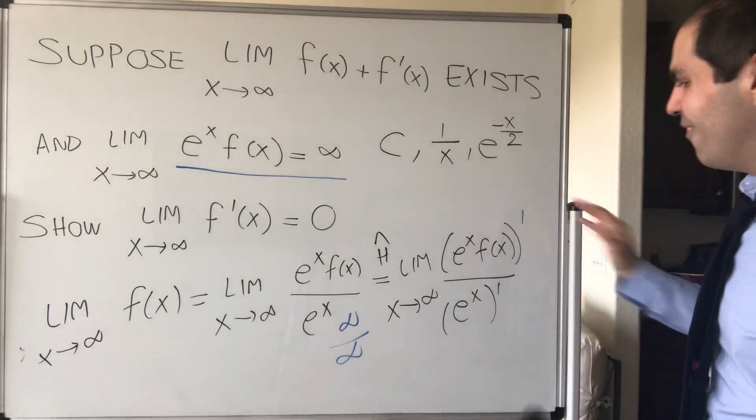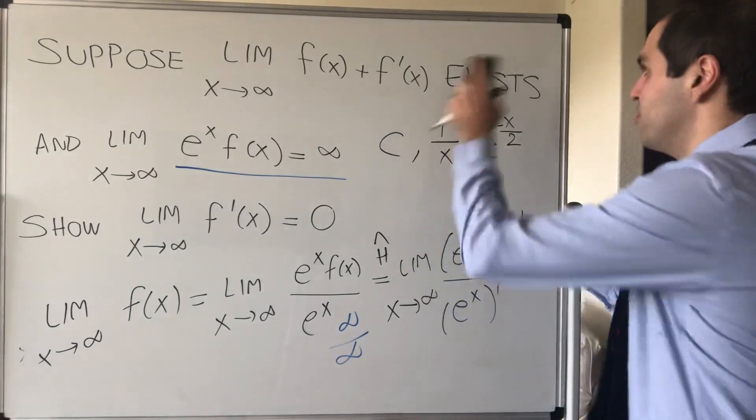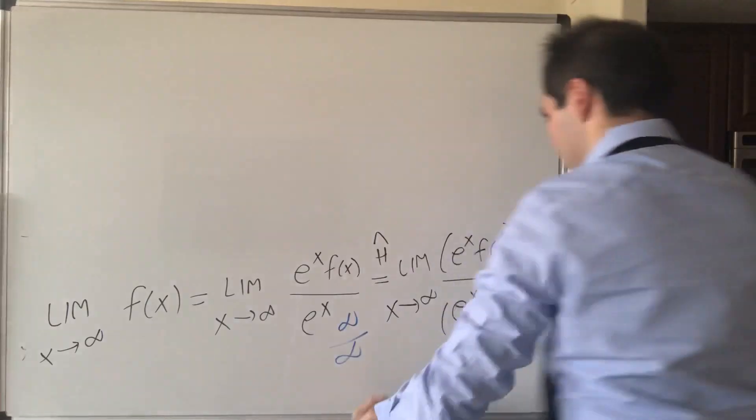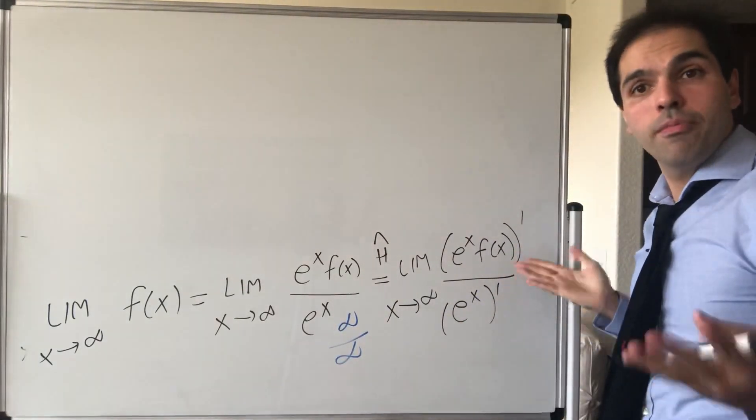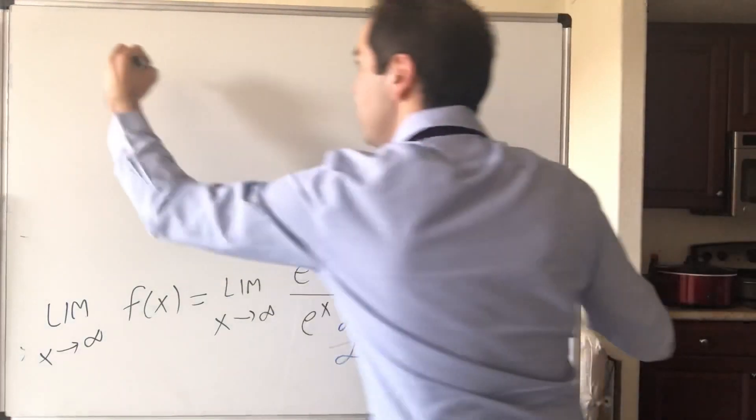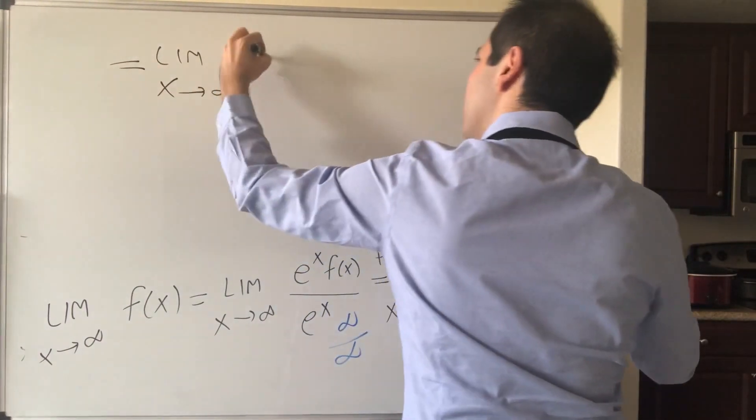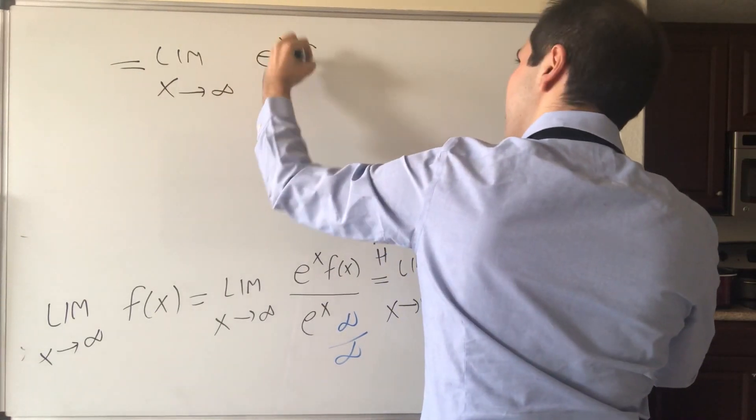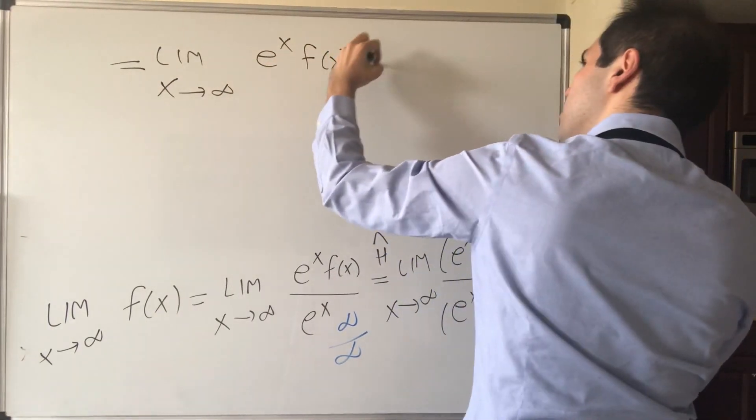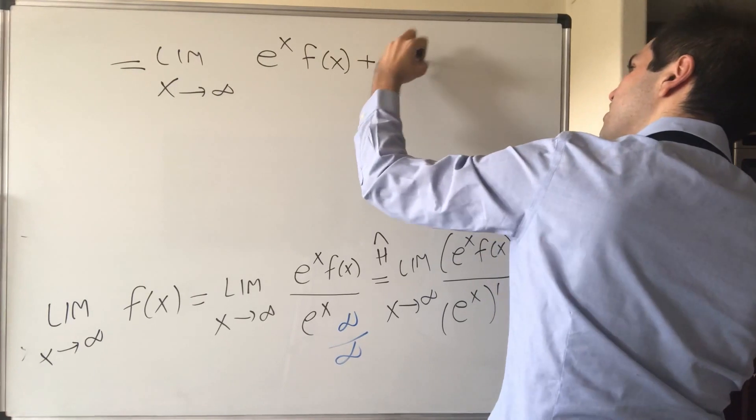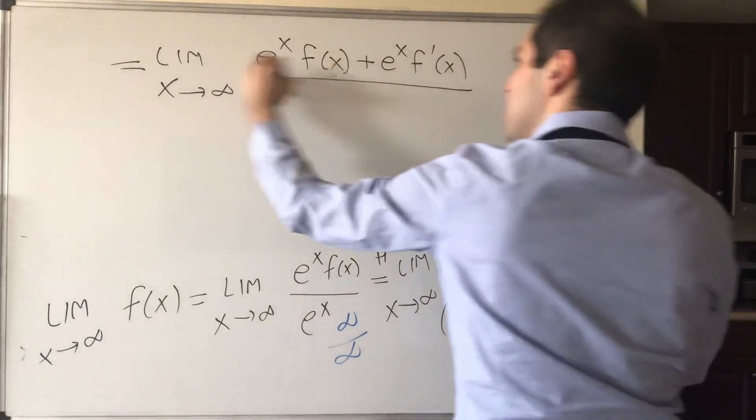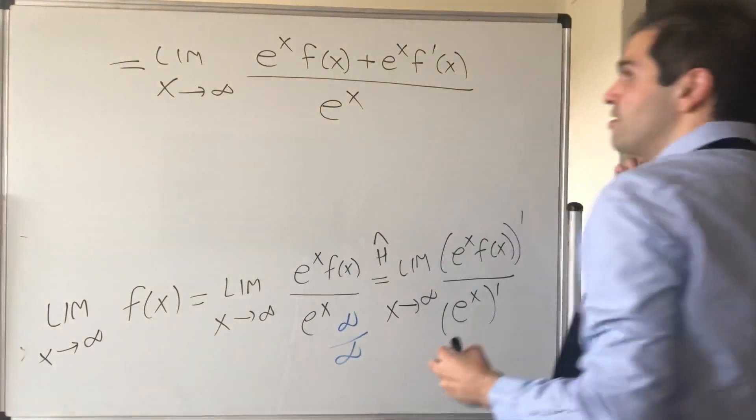And what we get then in the end is, well, if you now use the product rule, you get the limit as x goes to infinity of e to the x f of x plus e to the x f prime of x and divide it by e to the x.